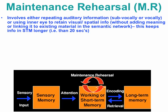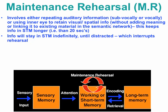Given the normal duration that we can retain information in short-term memory is around 20 seconds, we can maintain information by this repetition process indefinitely until we're distracted or we have interference, and then the information will simply be forgotten or discarded.